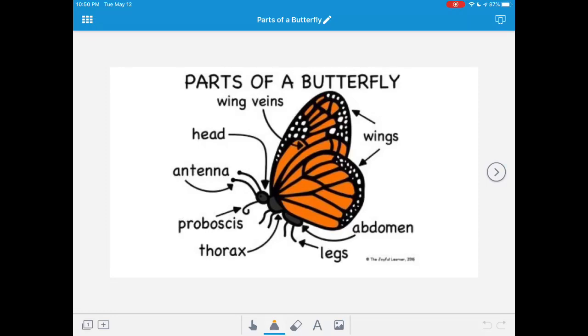We're going to continue learning about butterflies. We are going to learn about the parts of a butterfly today. Butterflies go through an amazing transition from eggs to larvae or caterpillars, then to chrysalis or pupas, and finally to adult butterflies.